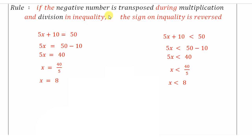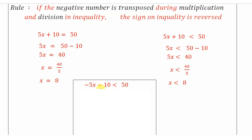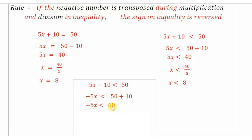Now I'll show where the sign-flip rule applies. Take negative 5x minus 10 is less than 50. I transpose negative 10 to the other side — this is subtraction, not multiplication or division, so I do NOT flip the sign. Negative 10 becomes positive 10, so 50 plus 10 equals 60. Now I need to transpose the negative 5, which is in multiplication.